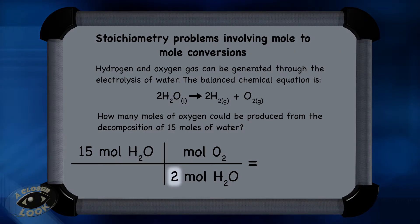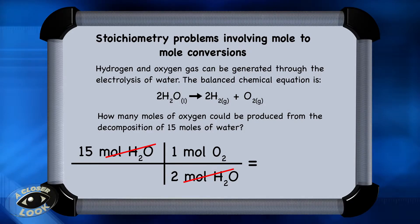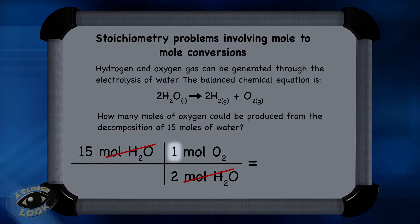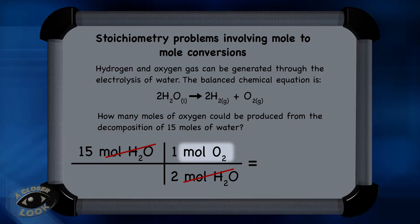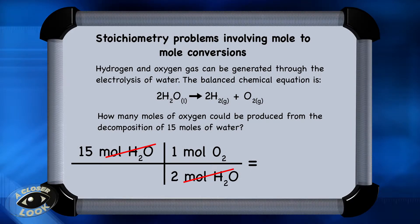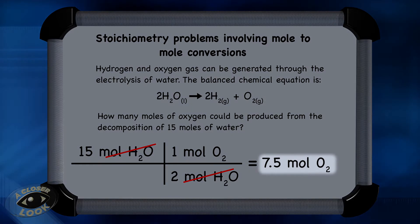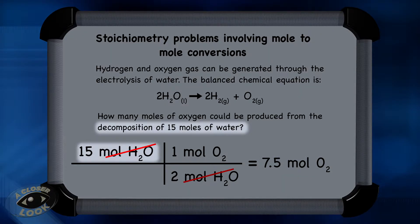So put a 2 in front of the water and a 1 in front of the oxygen. Now cancel the units of moles of water, and the converting part of the problem is finished. All that's left is to multiply 15 times 1 divided by 2. Notice the units are moles of oxygen, which is what the question asked for. The answer is 7.5 moles of oxygen produced from the decomposition of 15 moles of water.